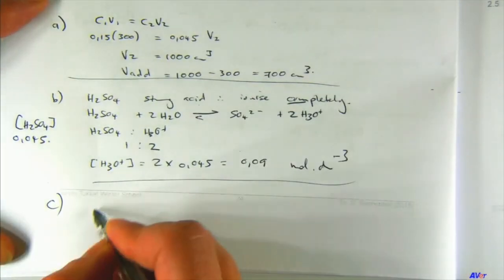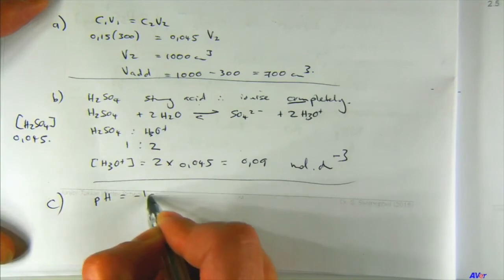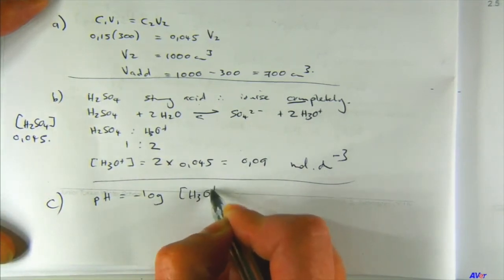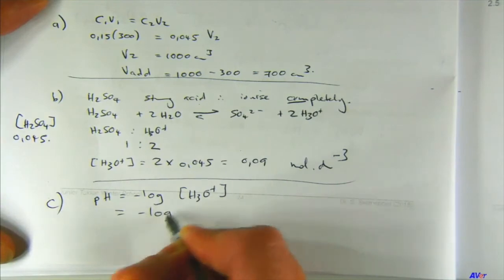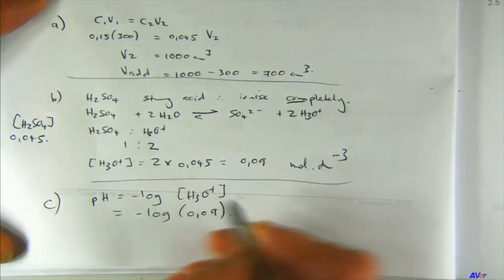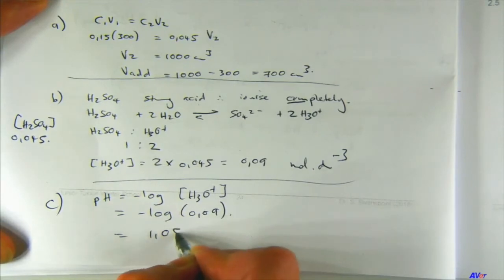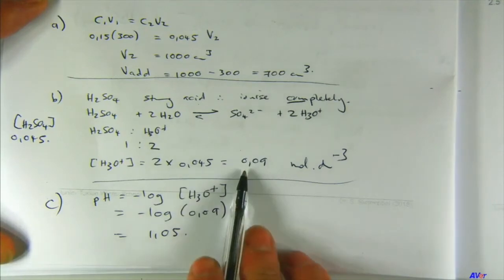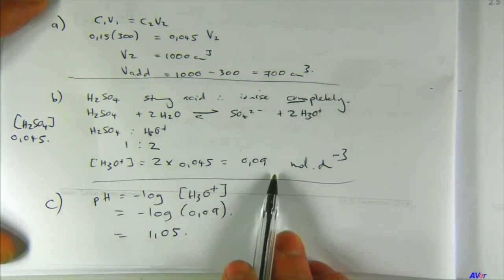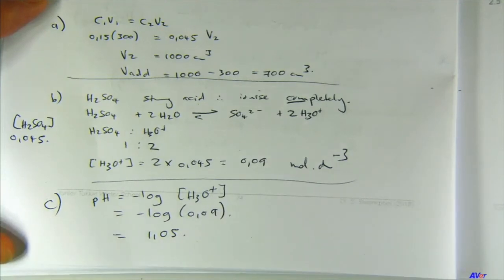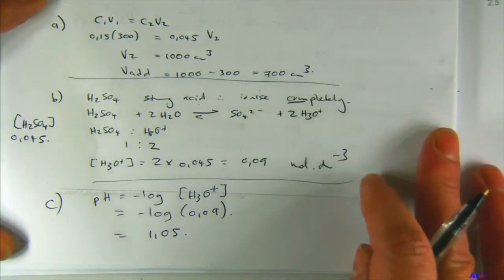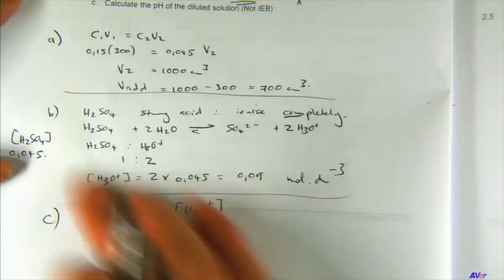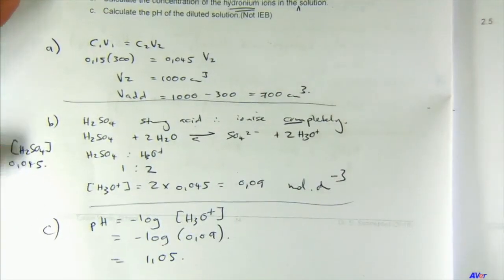For part c, pH is simply substituting into the equation. pH = −log(0.09) = 1.05. This makes sense: sulfuric acid is a very strong acid, and at 0.09 mol/dm³ all of it ionizes and each molecule gives two H⁺ ions — so you end up with a lot of H⁺ and a low pH.